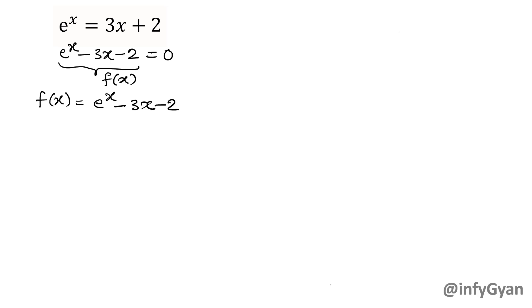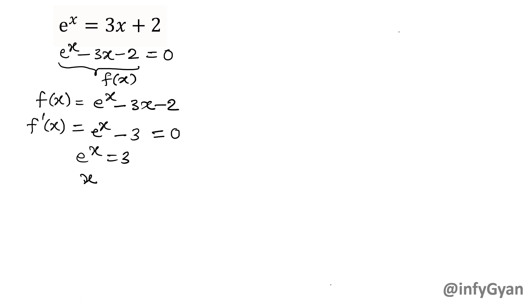Let us find out f'(x). The first derivative is e raised to the power x minus 3. Set that equal to 0 because we are calculating critical points. So, e raised to the power x is equal to 3 — take ln both sides. So, x ln e equals ln 3, meaning x is equal to ln 3. This is the first and only critical point.